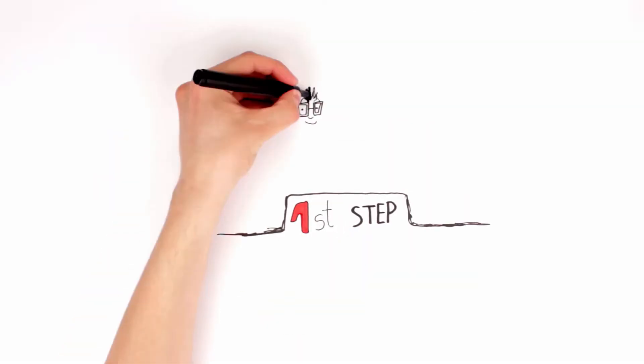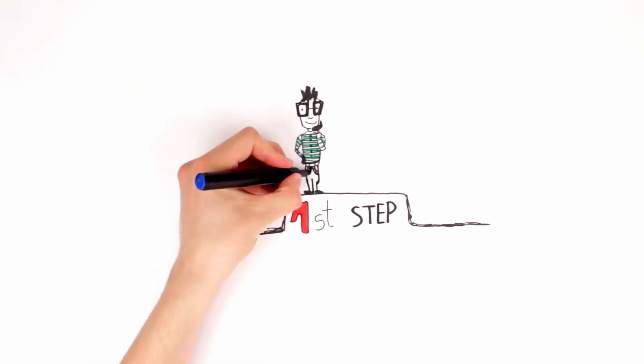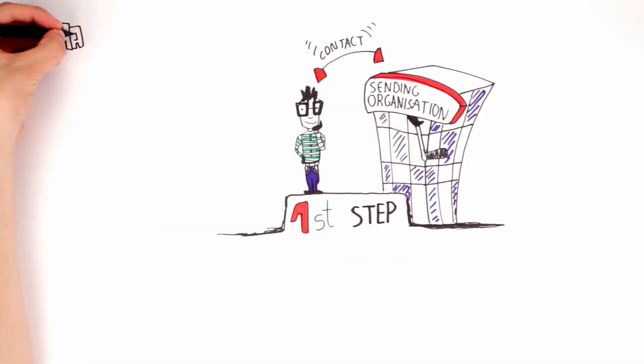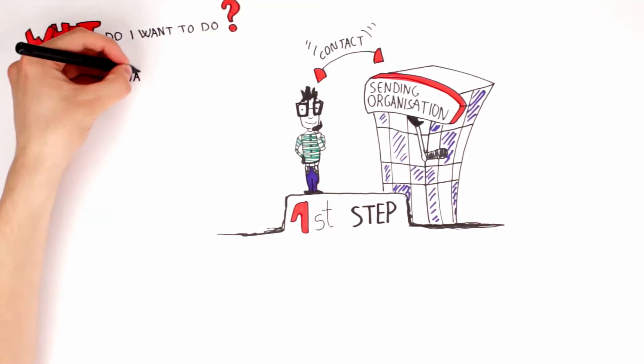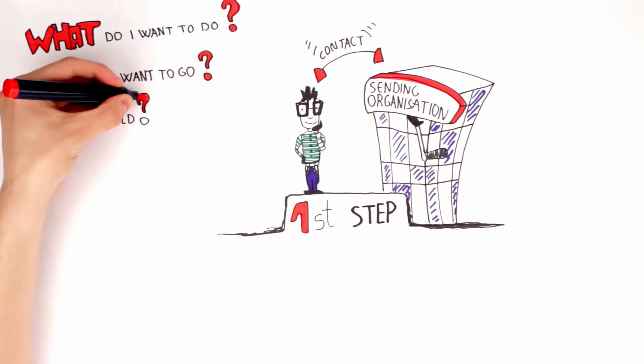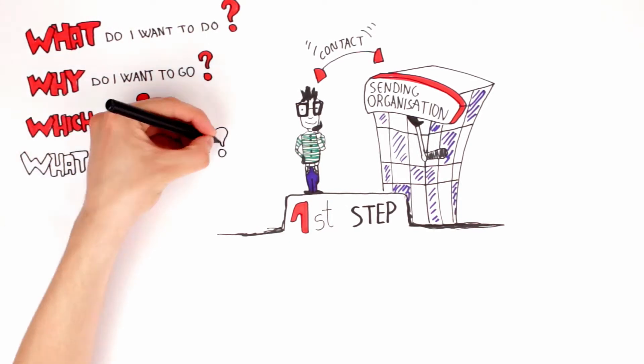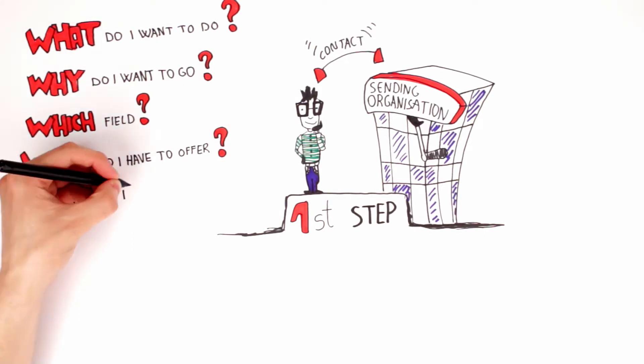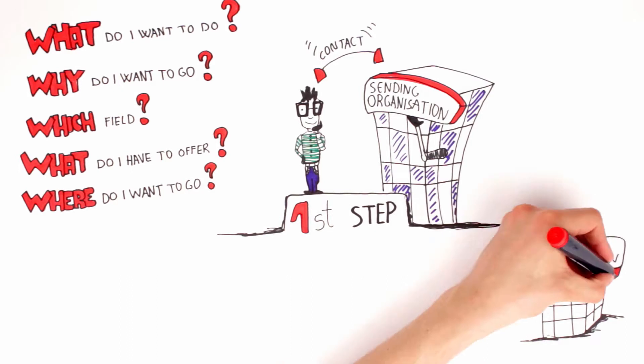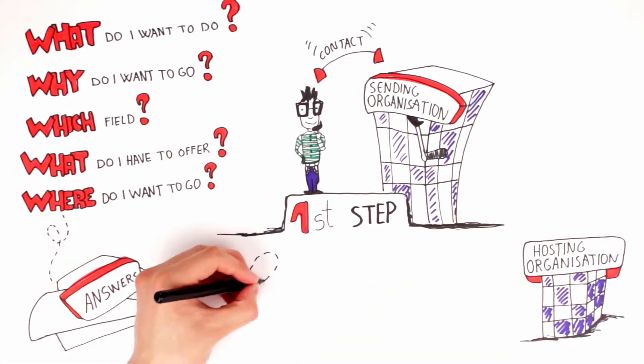The first step for a prospective volunteer is to find and contact a sending organization and together with them think about what do I want to do during my European Voluntary Service, why do I want to go, which field do I want to volunteer in, what do I have to offer the place I will be going to, ideas on a region or country. Based on these answers, they can together go and consult the database of approved hosting organizations.